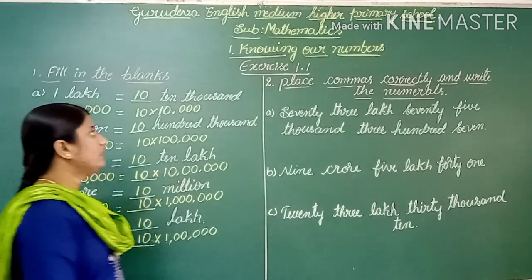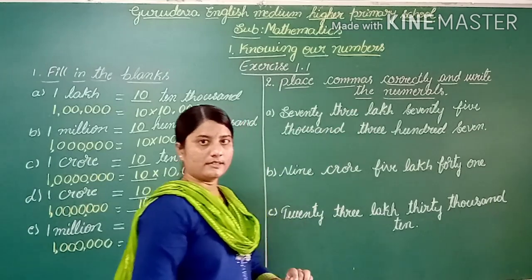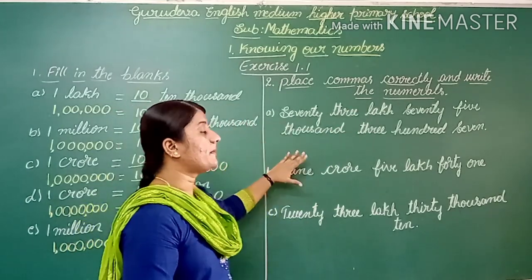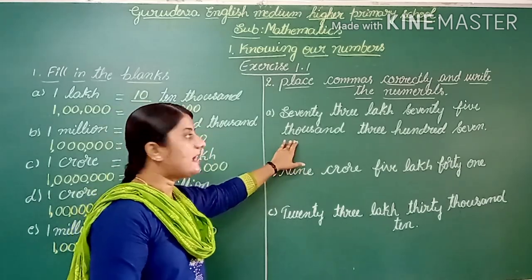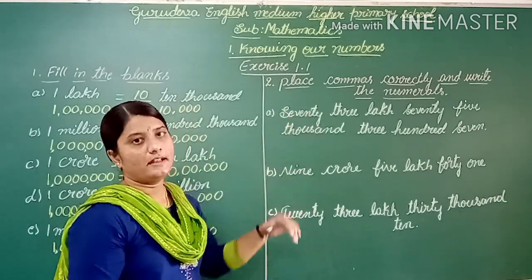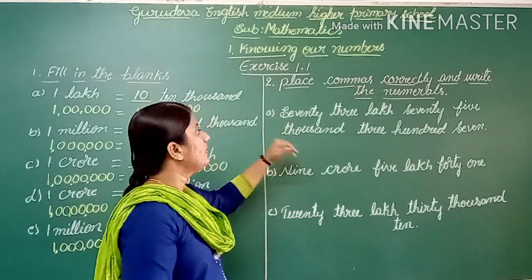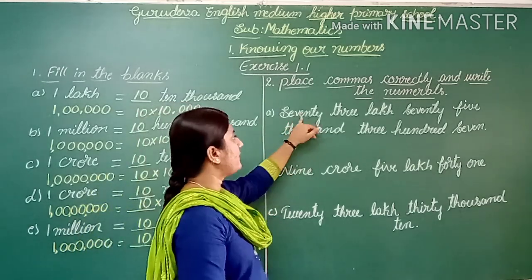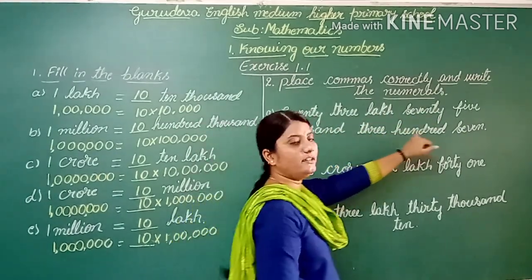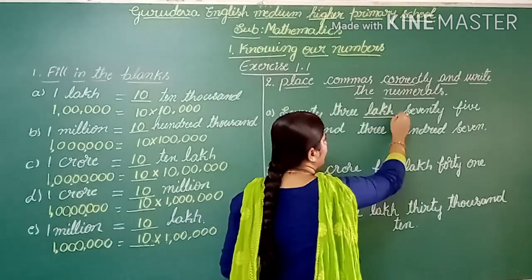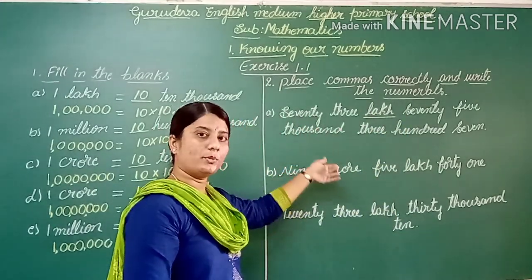Now let's go to the second section: place commas correctly and write the numerals. Here they give some number names for which we must write numerals and place commas according to the system of numeration. The first example is 73 lakh 75 thousand 307, which is in the Indian system of numeration.